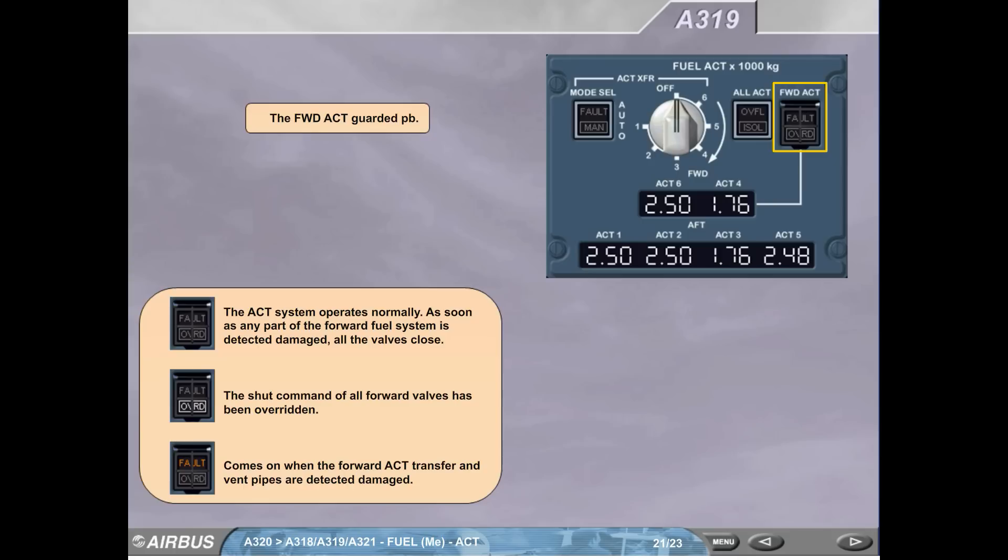The forward ACT guarded push-button. The ACT system operates normally. As soon as any part of the forward fuel system is detected damaged, all the valves close. The shut command of all forward valves has been overridden. Comes on when the forward ACT transfer and vent pipes are detected damaged.